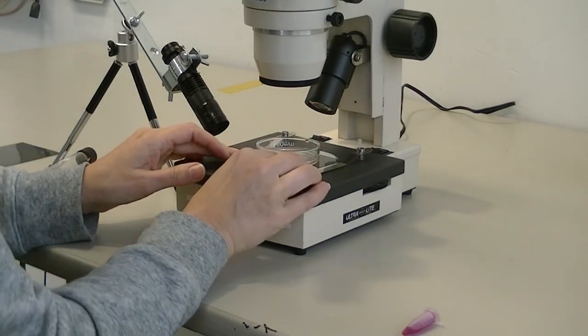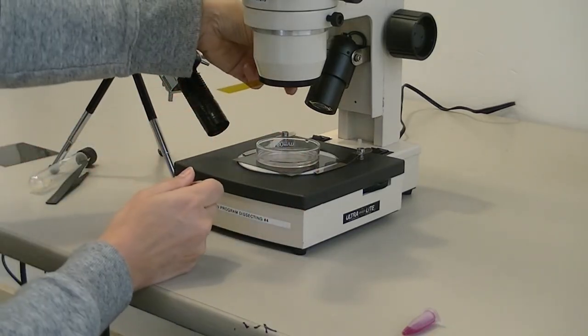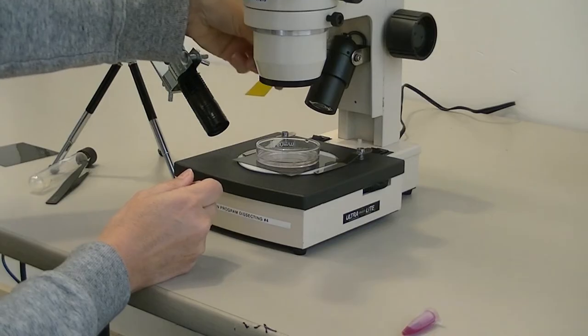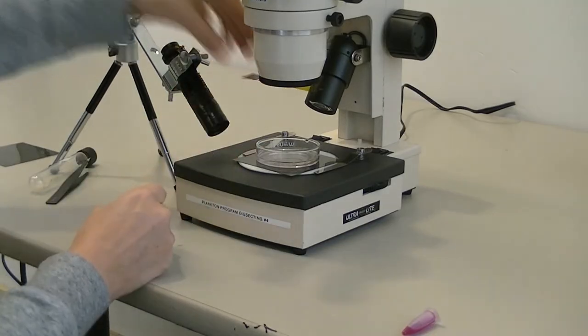We have a piece of yellow filter here that we've swung out of the way, and for the Nile Red process, we will put it in front of the objective lens.